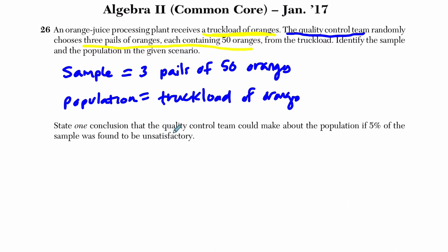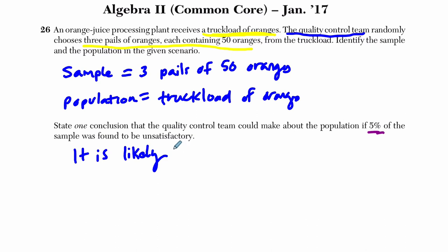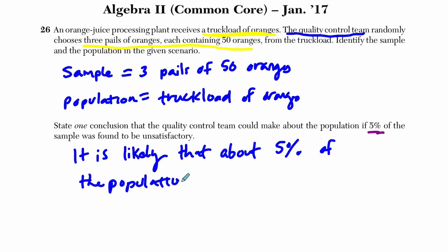It says: state one conclusion that the quality control team could make about the population if 5% of the sample was found to be unsatisfactory. I don't like this question because there's not really much you can say — you took a small sample and a small part of that sample was unsatisfactory. What you want to avoid is saying precisely 5% of the population will be unsatisfactory — that's not what we're going for. You can't say that precisely. What you can say — use words like this — it is likely, so it seems likely, that about 5% of the population is unsatisfactory.